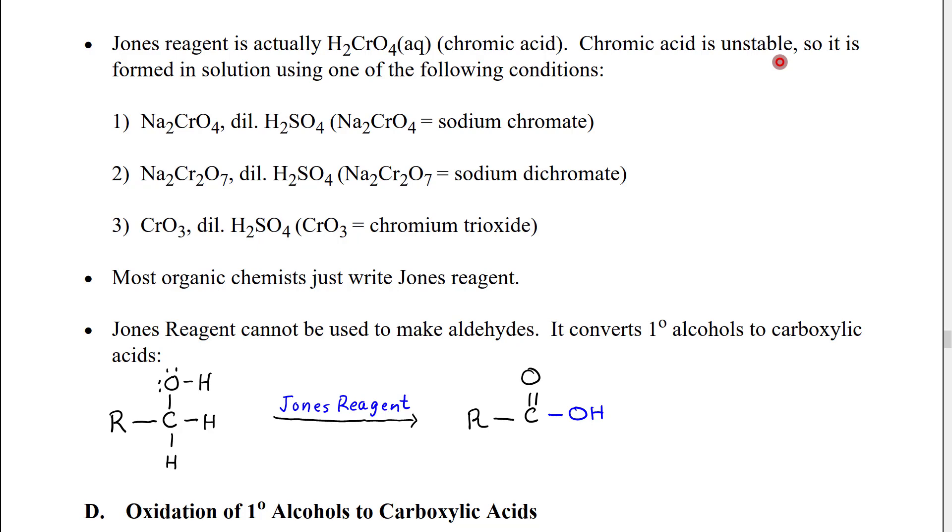There are three common ways to make Jones reagent. The first way is to use sodium chromate which is essentially the equivalent of sodium sulfate. We've replaced the two hydrogens with sodium ions. If we mix sodium chromate with strong acid like sulfuric acid the sulfuric acid will protonate the chromate ion and will produce chromic acid. So that's one way we make the Jones reagent.